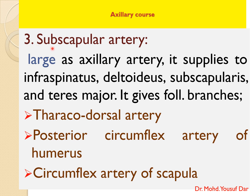The next artery is the subscapular artery, again a collateral branch of the axillary artery. It is as large as the axillary artery and supplies the infraspinatus, rhomboids, subscapularis, and teres major. It gives the following branches: the thoracodorsal artery, posterior circumflex artery of the humerus, and circumflex artery of the scapula.